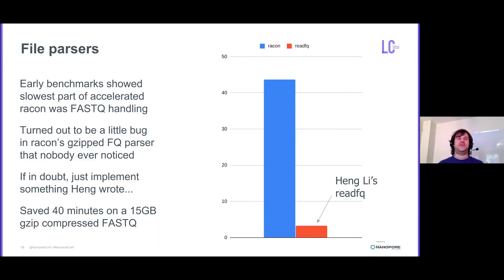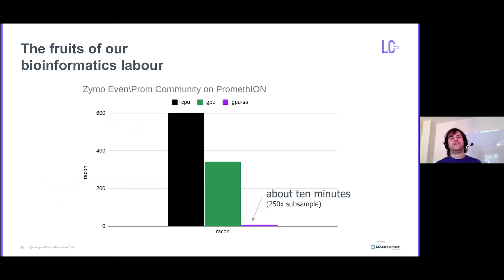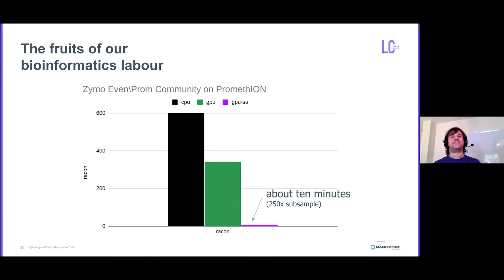Early benchmarks showed that they'd done such a good job of accelerating Racon that the only bottleneck left was file handling. It turns out there's a little bug in Racon's gzip FASTQ parser that no one had ever noticed. So if in doubt, just use something that Heng Li wrote. I ported his readfq parser to Reticulatus and we were able to save about 40 minutes on a 15-gigabyte FASTQ alone. With a whole bunch of other tricks and some subsampling, we can get the iteration time for Racon down to about 10 minutes for that massive PromethION dataset. This is no diss on Racon — we're just squeezing all the performance we can out of the polishing to make it as fast as possible.